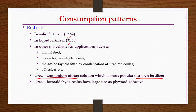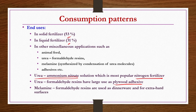Urea-formaldehyde resins have large use as plywood adhesives. Melamine, obtained by condensation of urea molecules, is used to form melamine-formaldehyde resins used as dinnerware and for extra-hot surfaces.